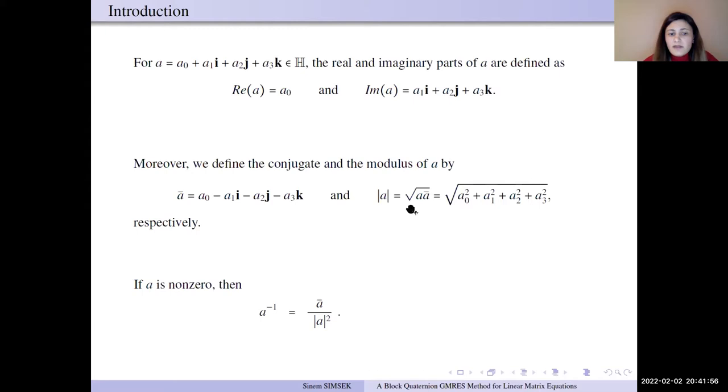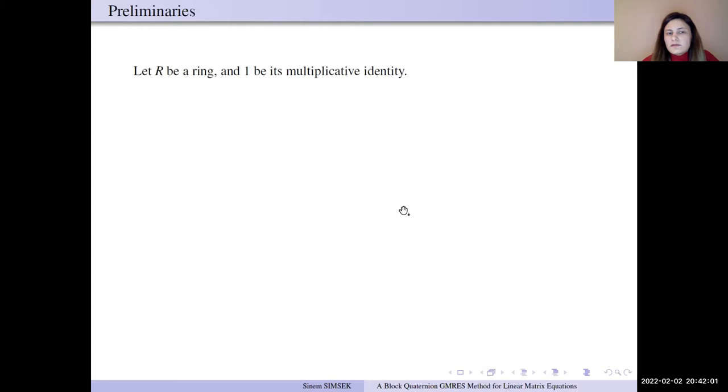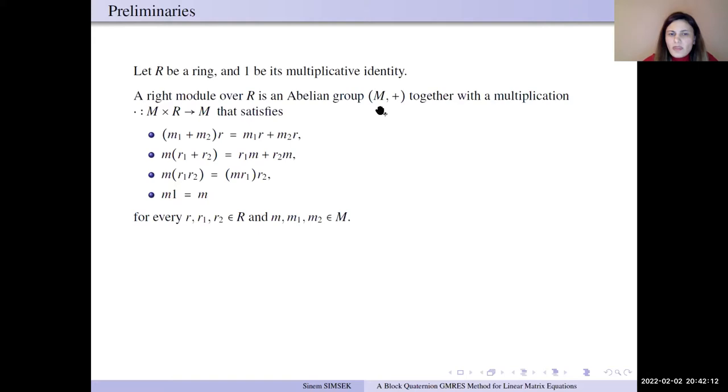If a is non-zero, then we have inverse of a numbers. Now we define the right module. Let R be a ring and M is the abelian group. If we define the multiplication rules, these four properties, M is the right module.